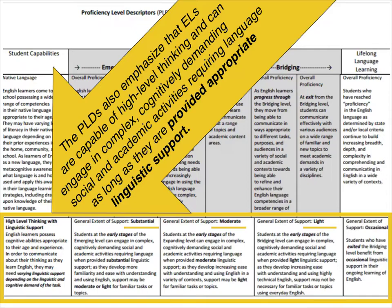For example, a student at the emerging level may need substantial support, a student at the expanding level may need moderate support, and a student at the bridging level may need light support. The amount of scaffolding really just depends on the familiarity and complexity of the task.